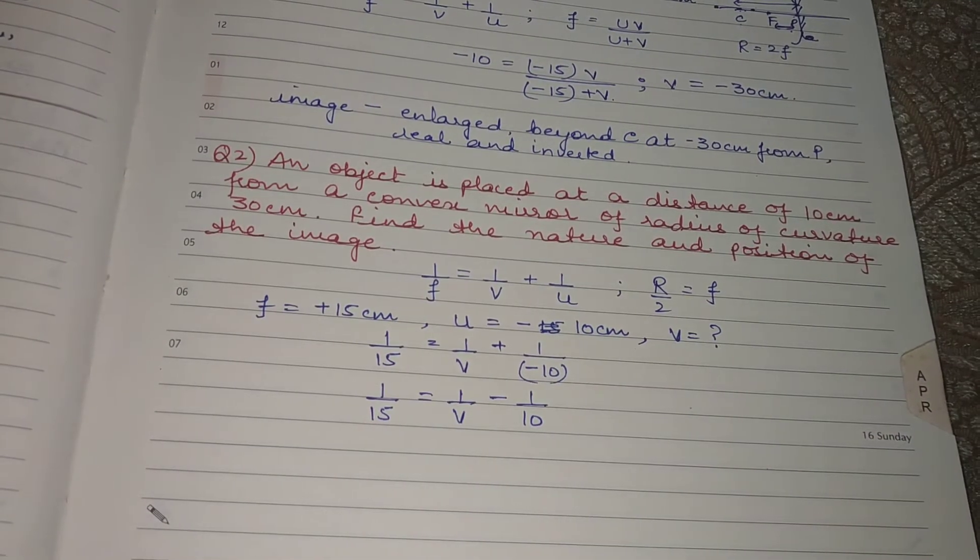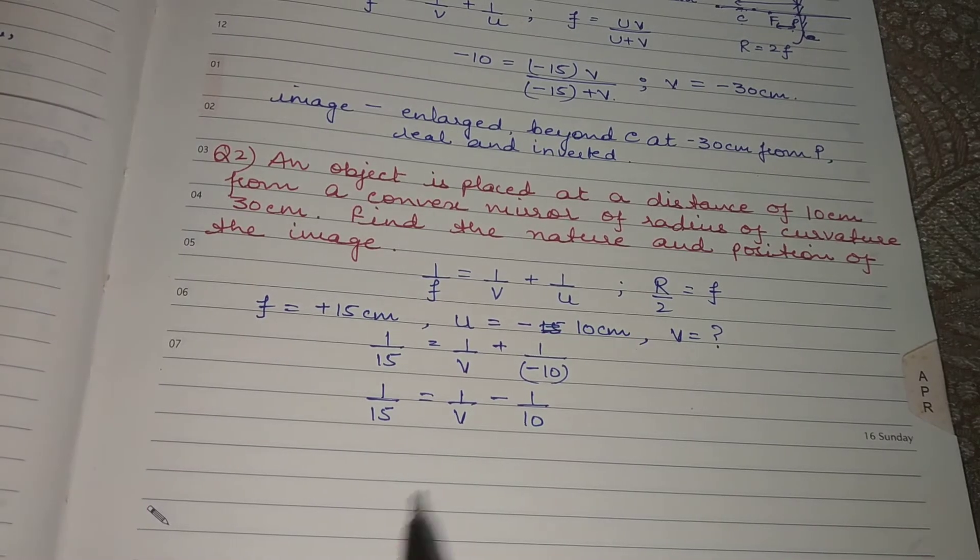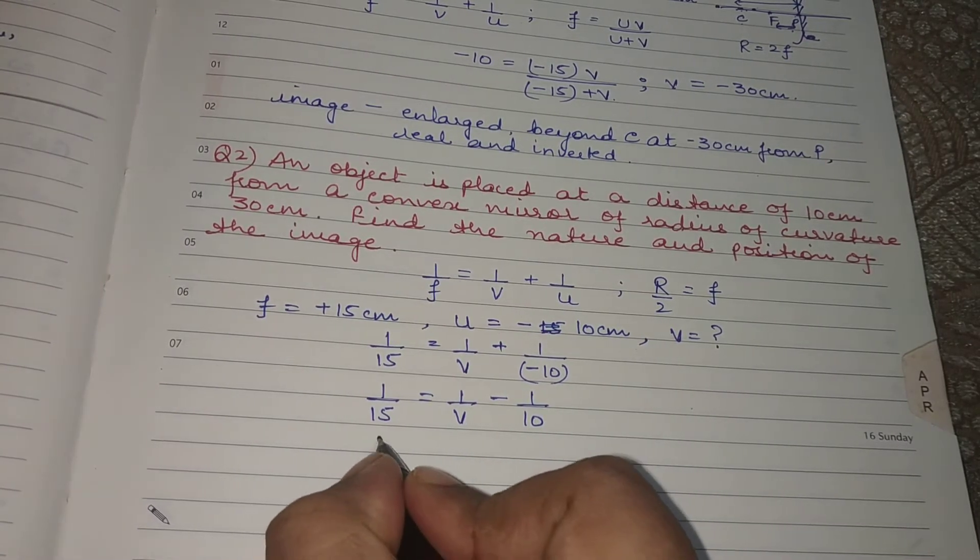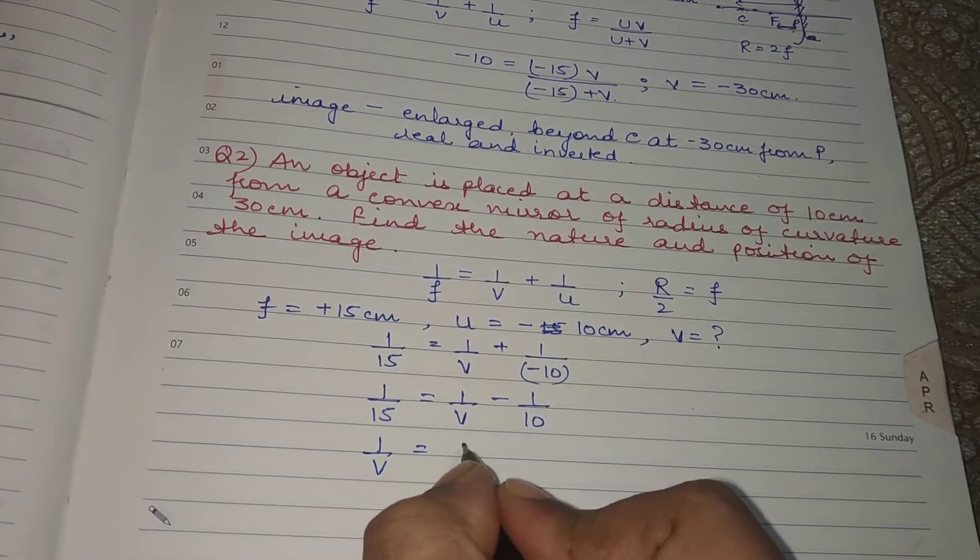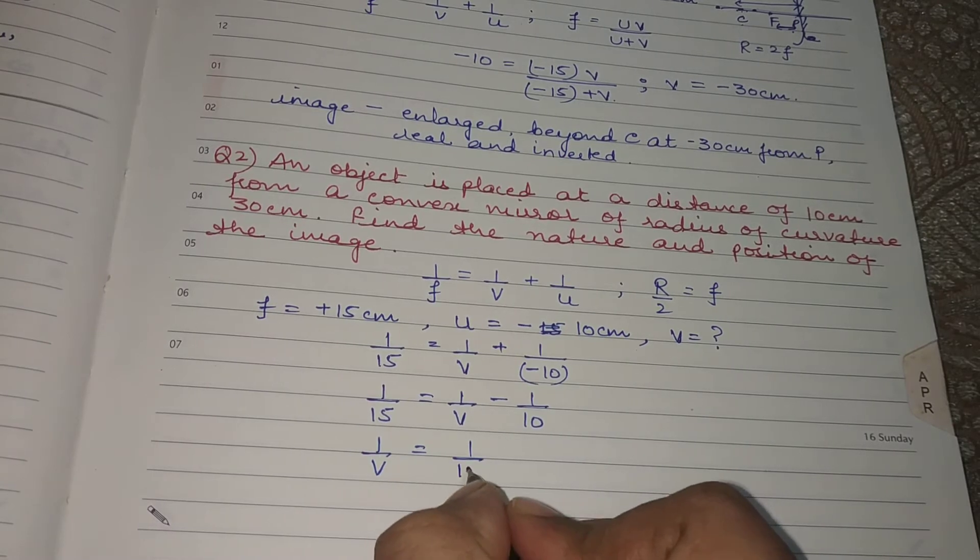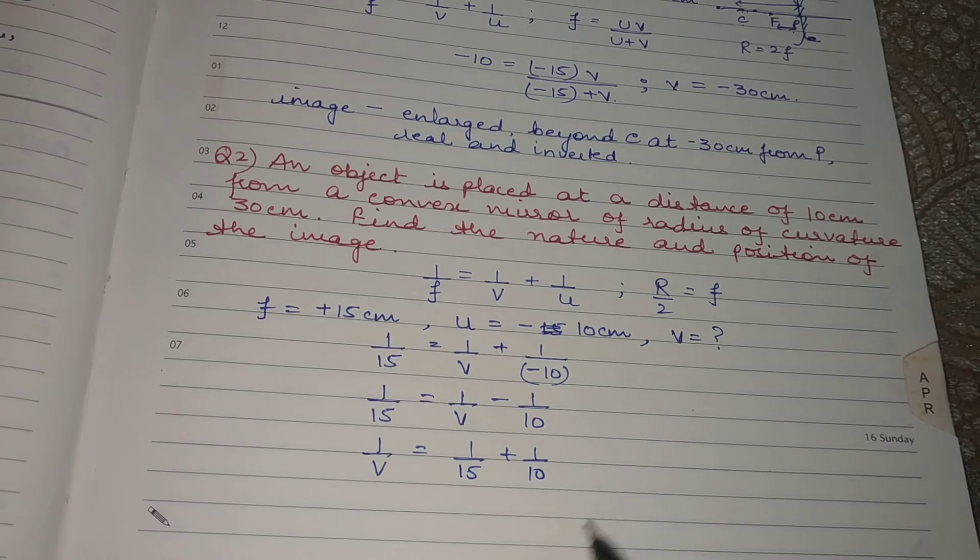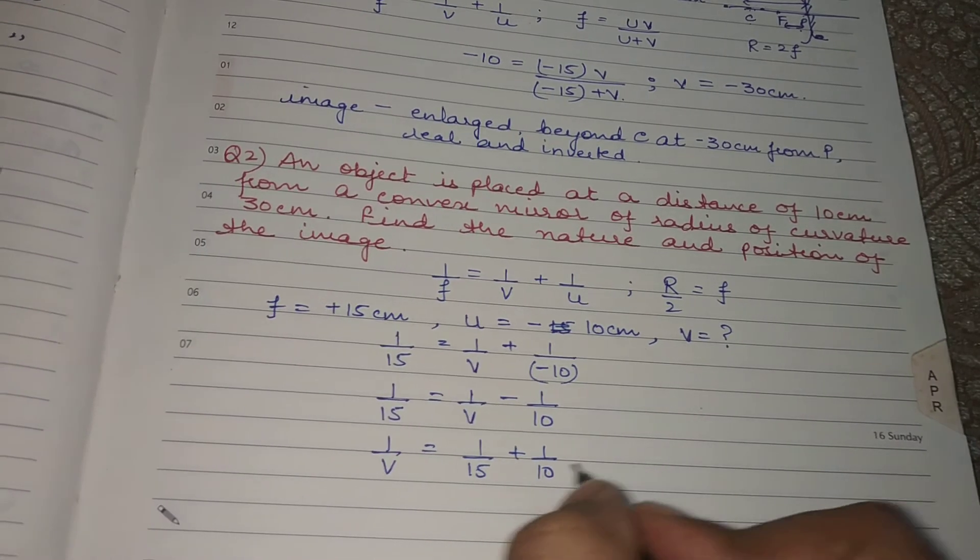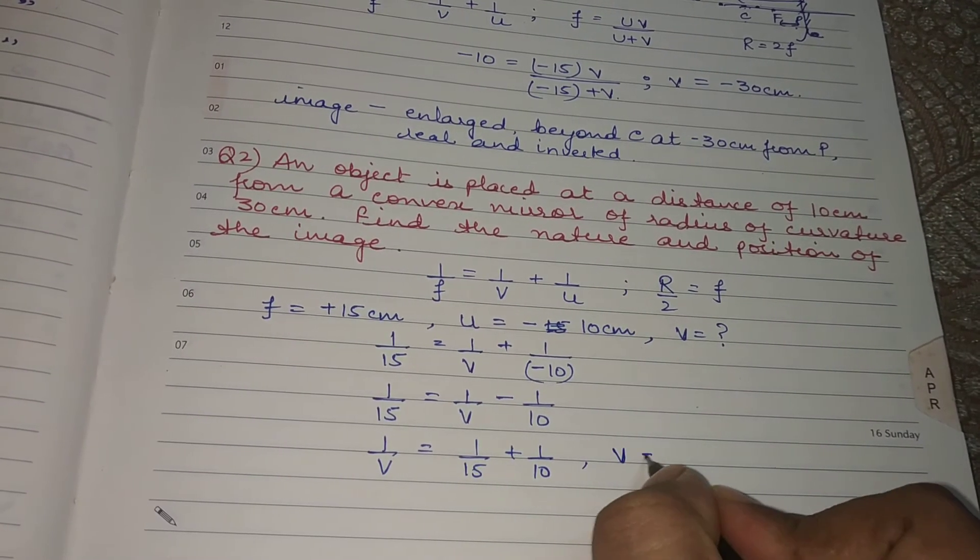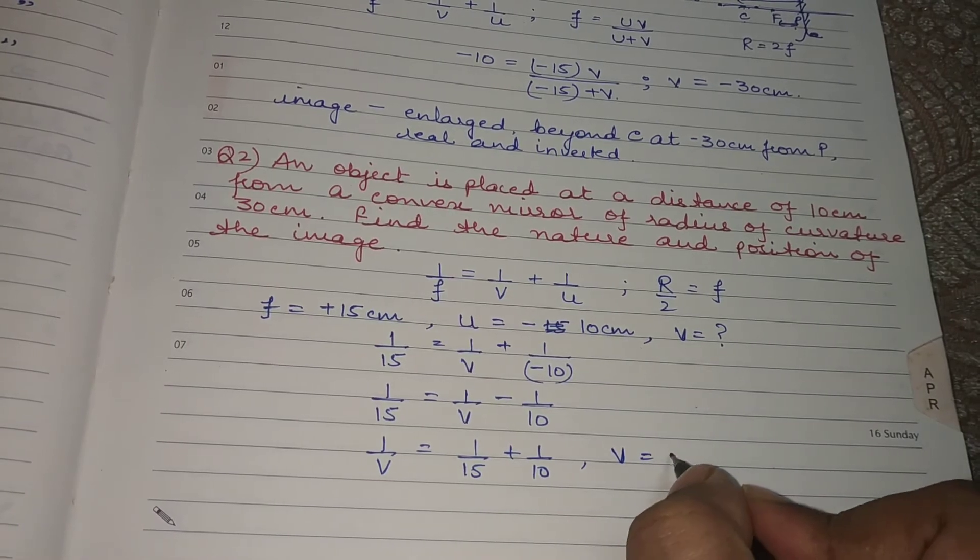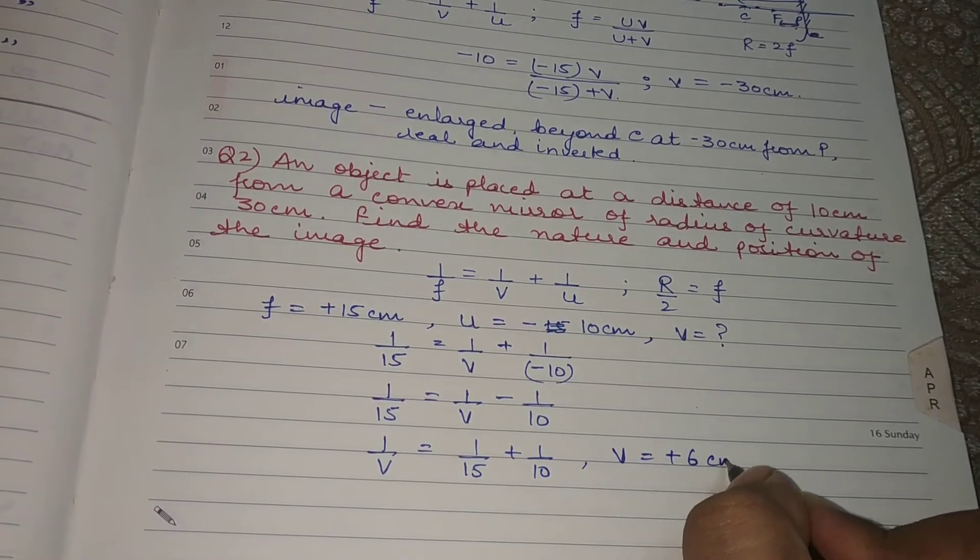Since we want to find the value of v here, you can easily write 1 upon v equals to 1 upon 15 plus 1 upon 10. On taking out the LCM and solving for v, we will obtain the value of v to be plus 6 cm.